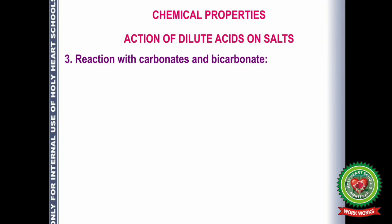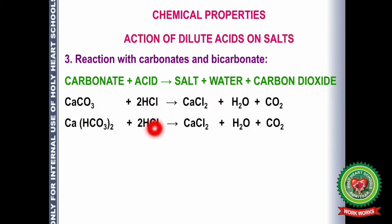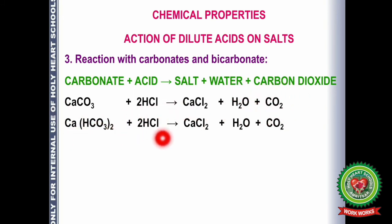The third reaction is of acids with carbonates and bicarbonates. When the anion in a salt is CO₃²⁻ it is known as a carbonate, and when the anion is HCO₃⁻ it is known as a bicarbonate. CaCO₃ plus 2HCl gives calcium chloride, water, and CO₂ gas. Similarly, calcium bicarbonate reacting with acid also gives salt, water, and carbon dioxide — whenever carbonate salts react with acid they liberate CO₂.